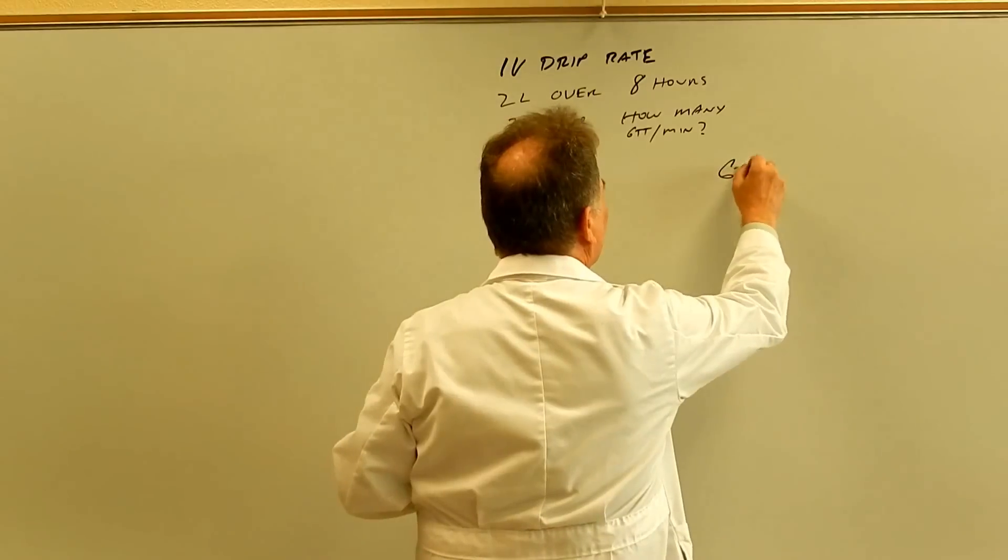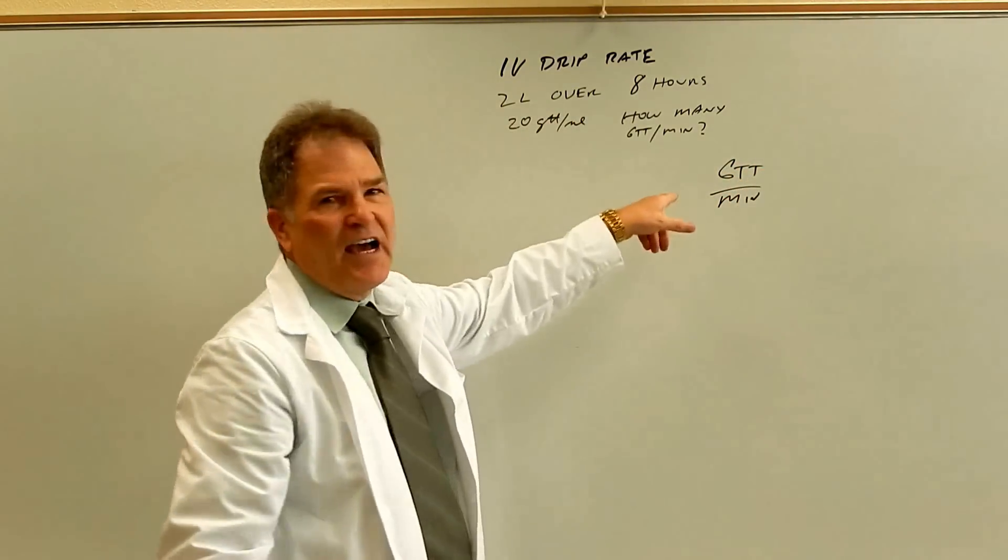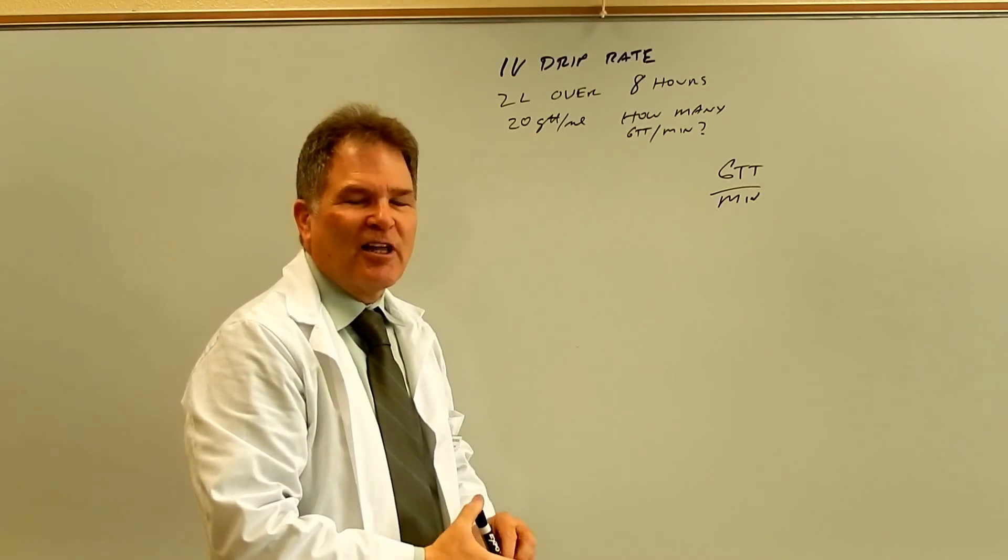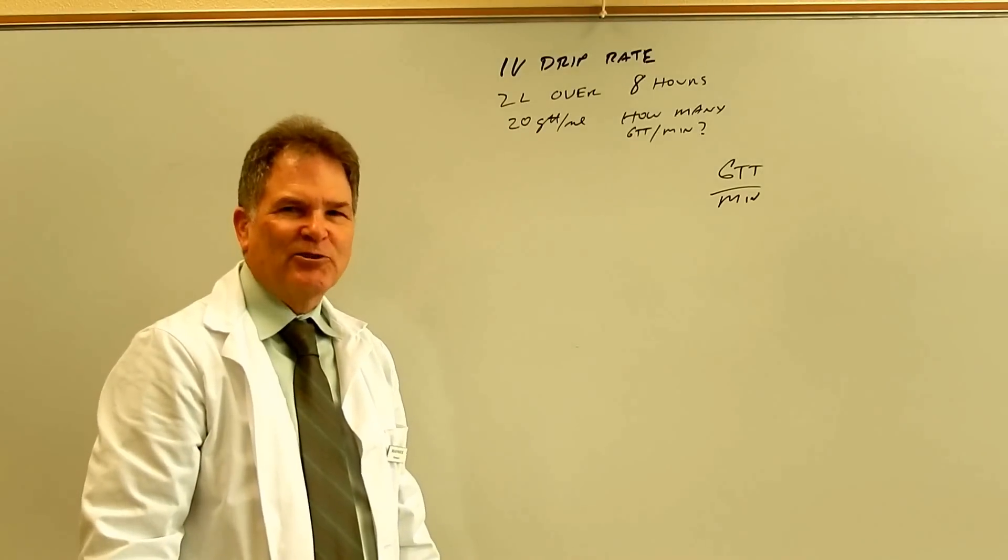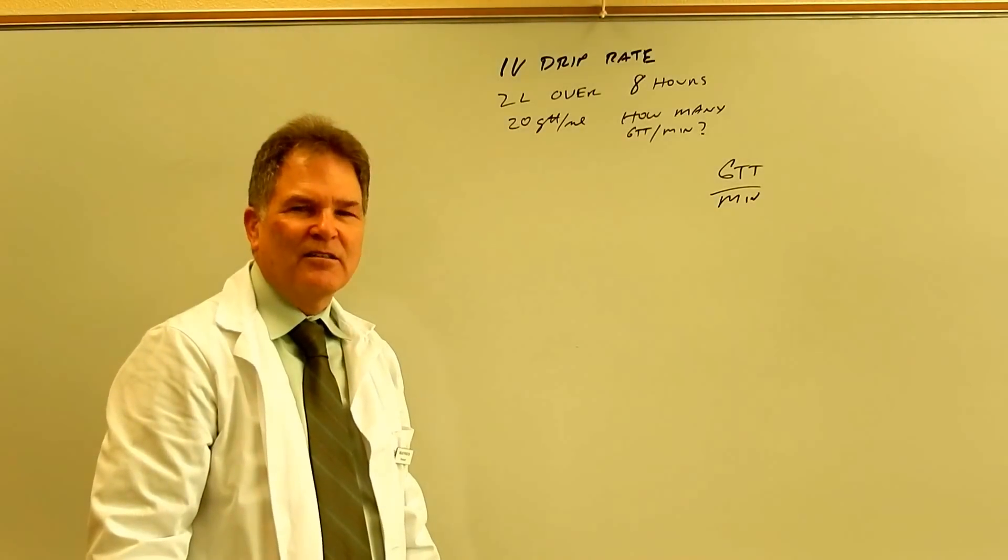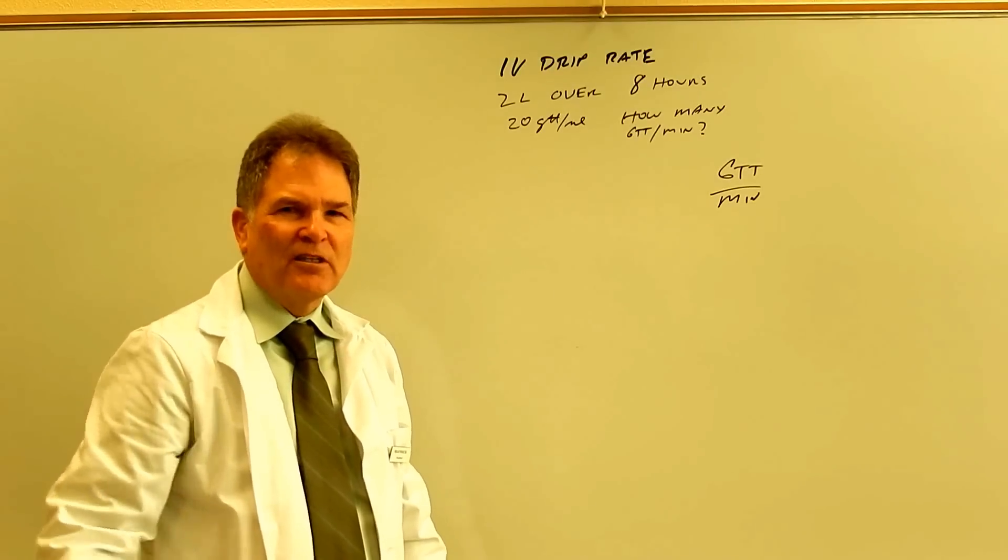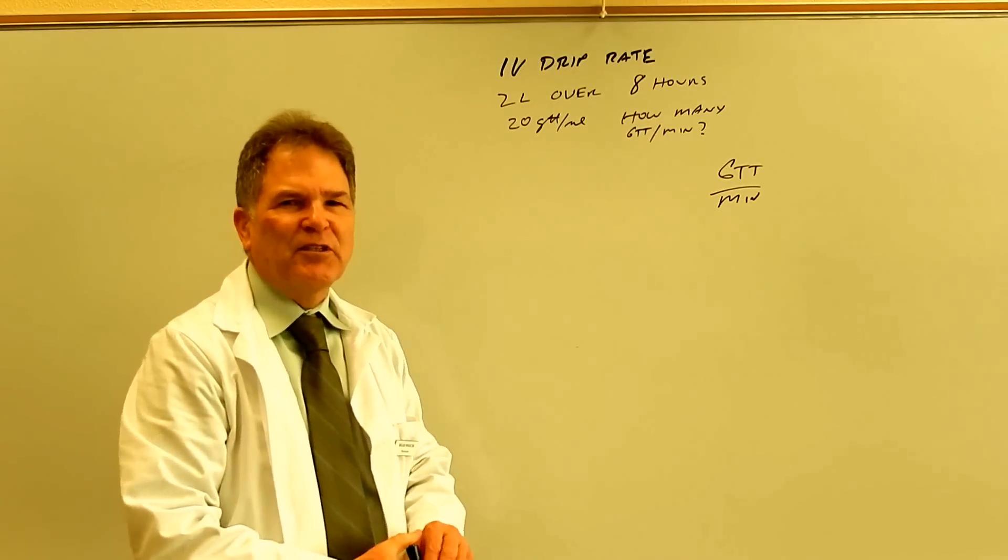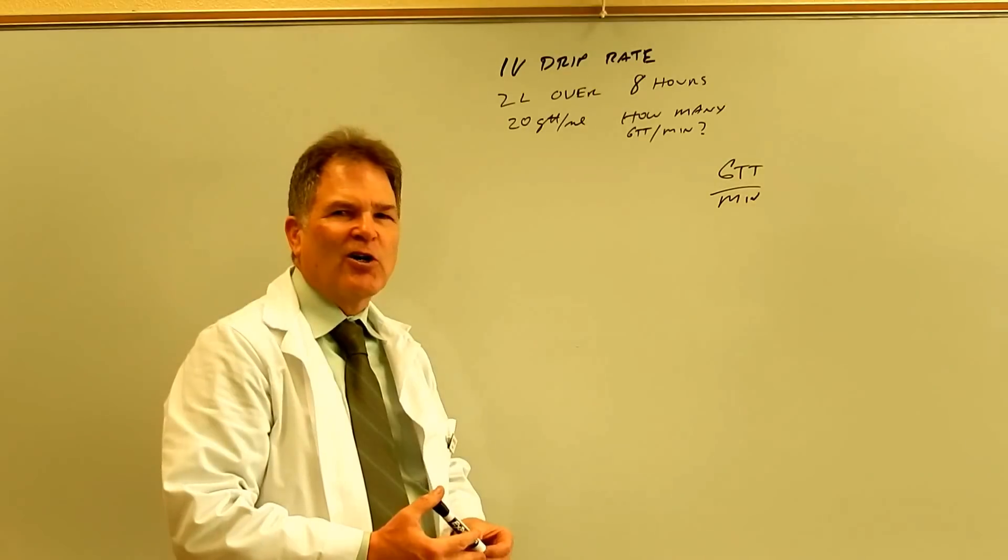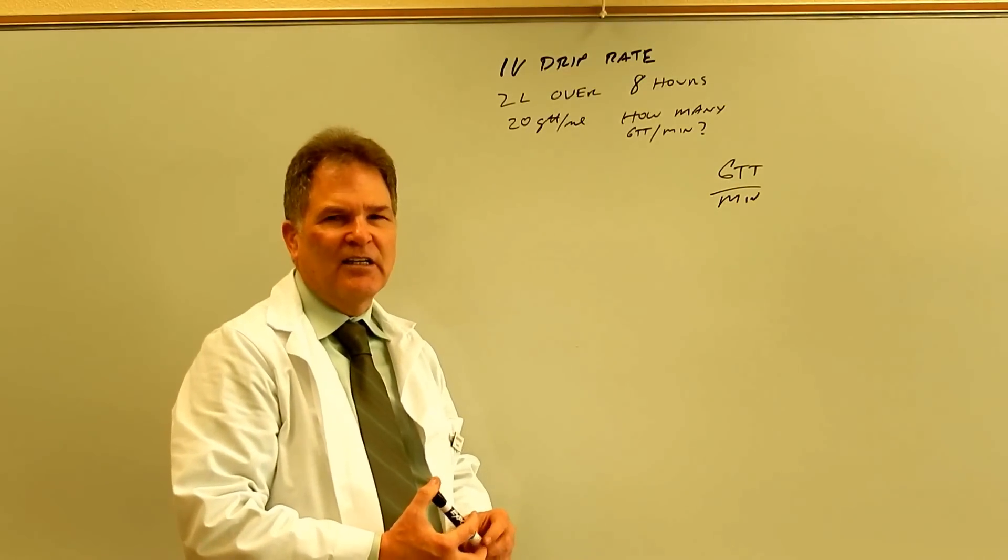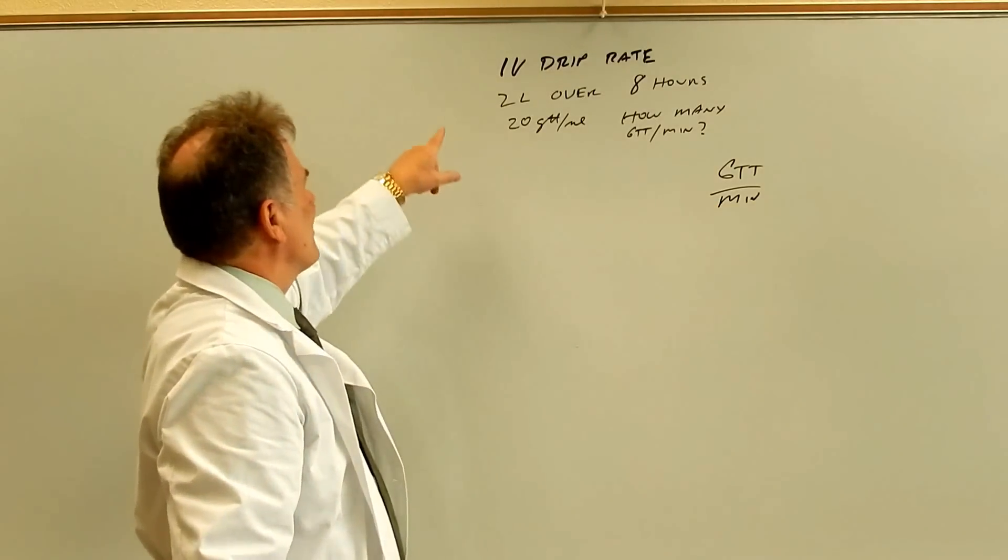We need to end up with drops per minute. Now you can think of that as a speed. Just like if someone asked you how fast is your car going in feet per second, it weighs 2,000 pounds, that wouldn't make any sense. They have to give you a speed to start off with, so they can say how fast is your car going in feet per second if it's going 60 miles per hour. So to end up with a speed, we have to start with a speed.